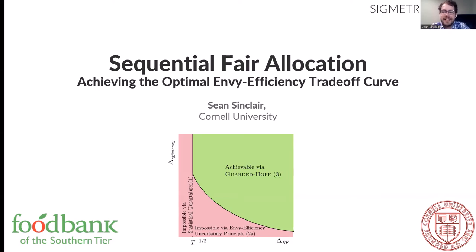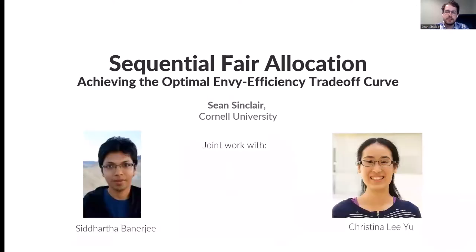Hi everyone, my name is Sean Sinclair and I am a fourth year PhD student at Cornell in the Operations Research Department. Today I'll be talking about our paper on sequential fare allocation achieving the optimal NV efficiency trade-off curve. This paper is joined with my two advisors Sid Banerjee and Christina Yu, who are both also at Cornell in the Operations Research Department.